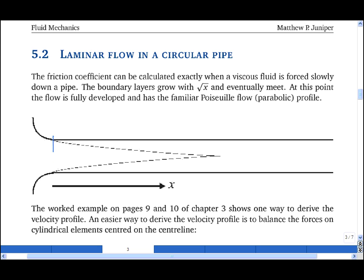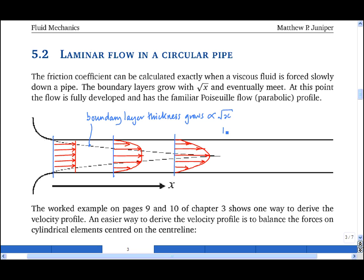The flow at entry will be plug flow, meaning uniform velocity in the x direction, but a boundary layer will develop growing with the square root of x. And as it does so, the velocity profile changes until the boundary layer meets itself at the surface of the pipe, from which point the flow is fully developed.